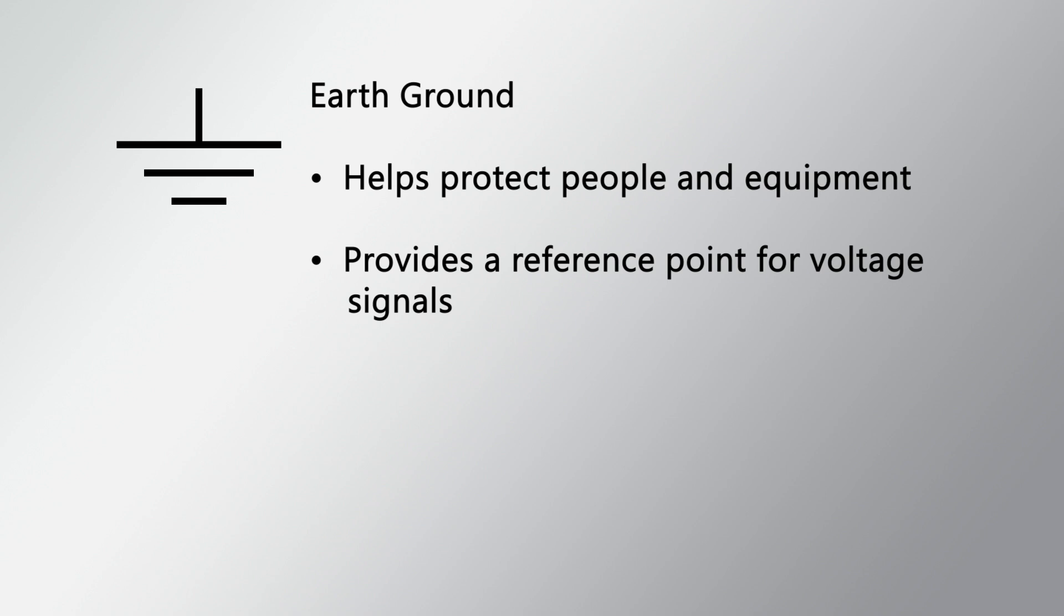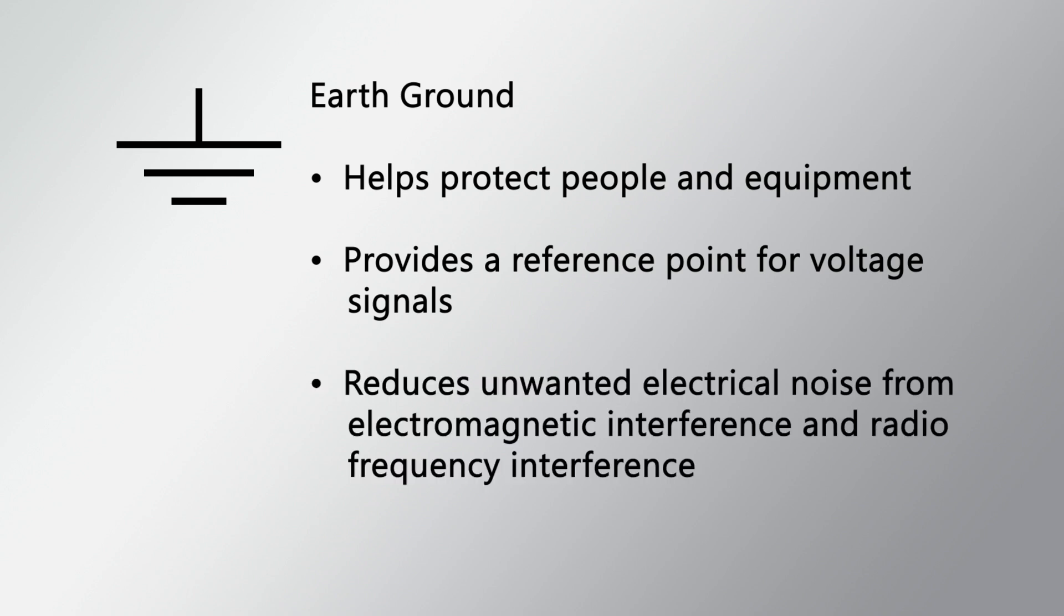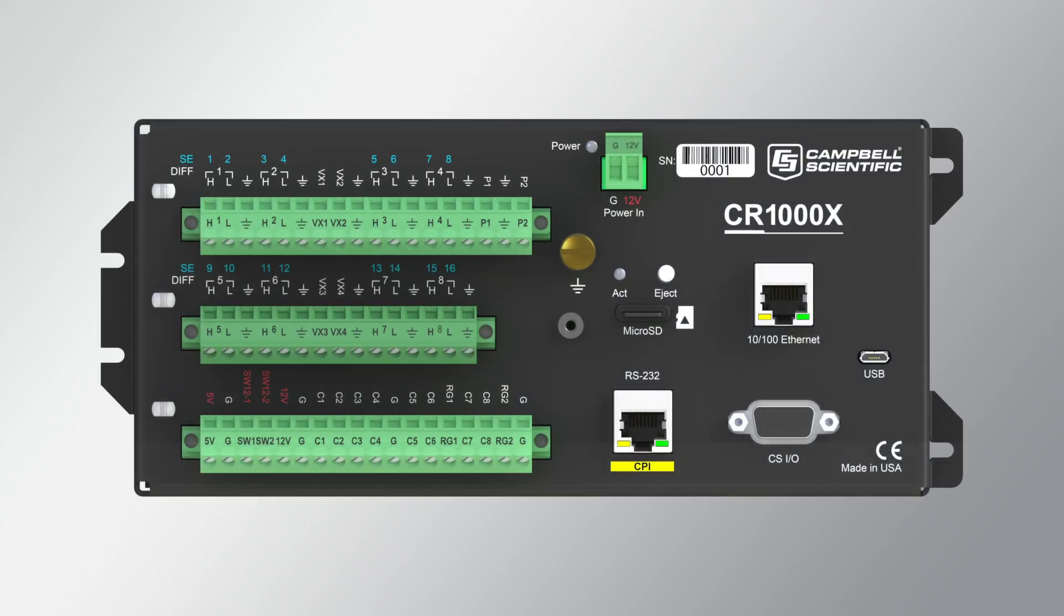The earth ground can reduce unwanted electrical noise from electromagnetic interference and radio frequency interference. The different grounding terminals on the data logger wiring panel are used to accomplish this.